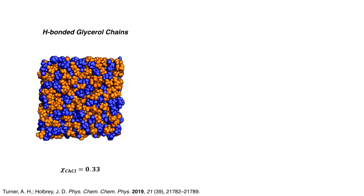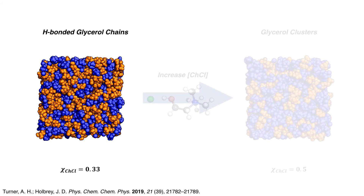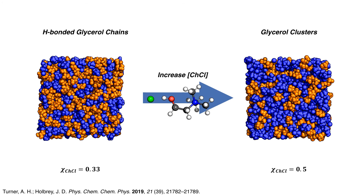An EPSR simulation, constrained by experimental small angle neutron diffraction data, was used to shed light on the structure and hydrogen bonding present in these choline chloride glycerol eutectic-forming liquids.